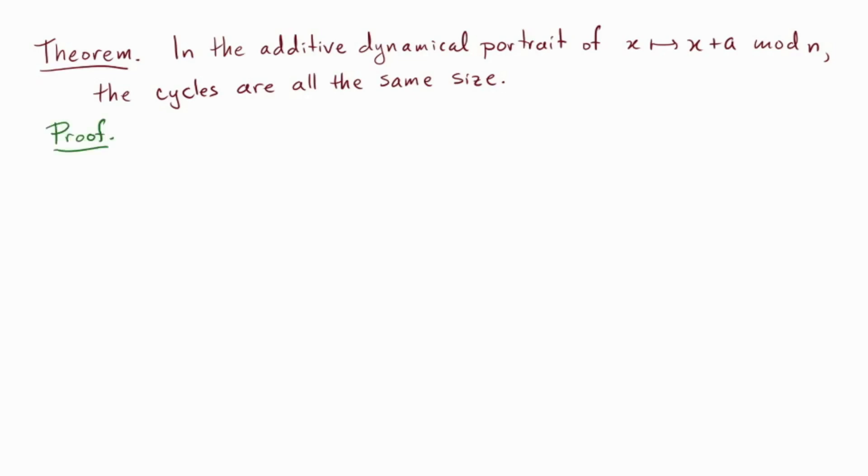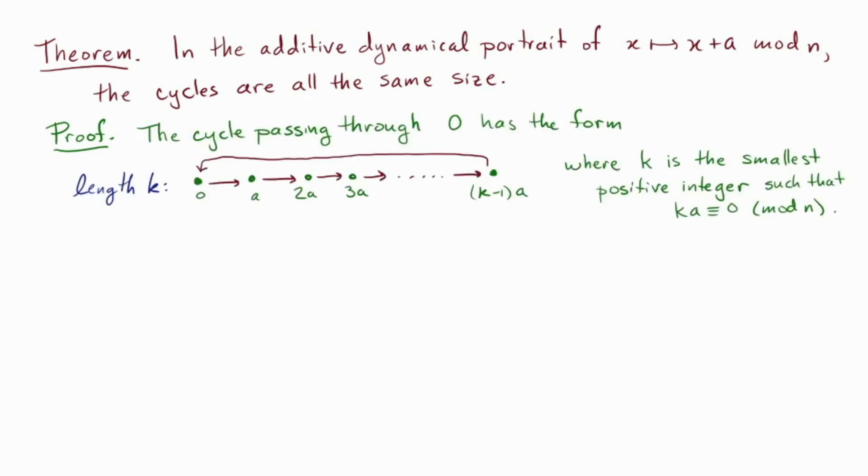Theorem. In the additive dynamical portrait of x maps to x + a modulo n, the cycles are all the same size. Proof. So we'll show all the cycles are the same size as the cycle passing through zero. Okay, of length k. So the cycle passing through zero has the form zero going to a, going to 2a, and so on, and back to zero. And if it's length k, that means it goes up to k minus 1 times a, and then back.